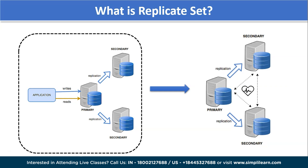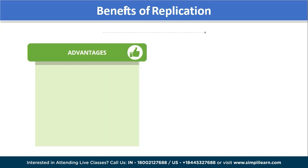The heartbeat mechanism has a configurable time for pinging nodes, with a default of 10 seconds. If all nodes respond with an acknowledgment to the heartbeat, the cluster continues to work. If one node crashes — for example, the primary node — an election takes place involving the remaining nodes. When a secondary node doesn't receive a response to heartbeats after the configured timeout, it calls for an election, and this continues until the failed primary node is recovered.